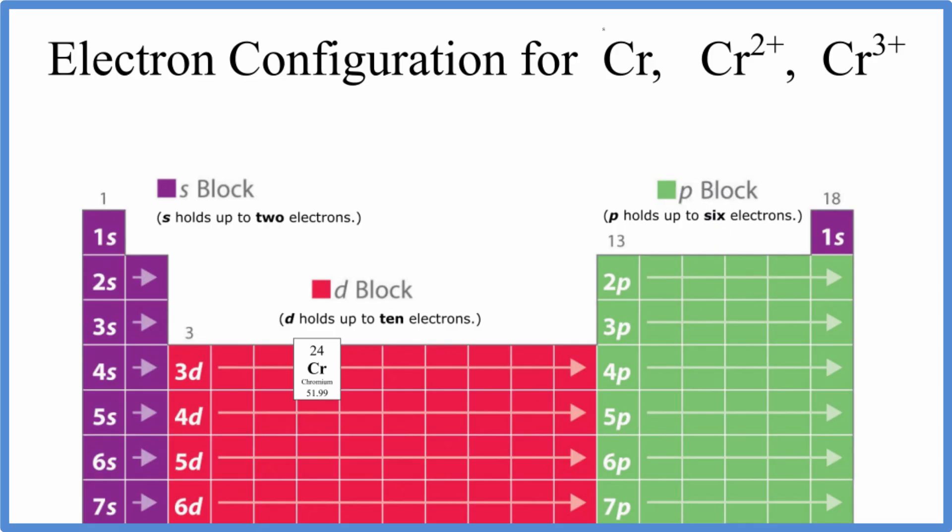Let's start by writing the electron configuration for chromium on the periodic table. Chromium has an atomic number of 24. That means it has 24 protons. Since it's neutral, it'll have 24 electrons.